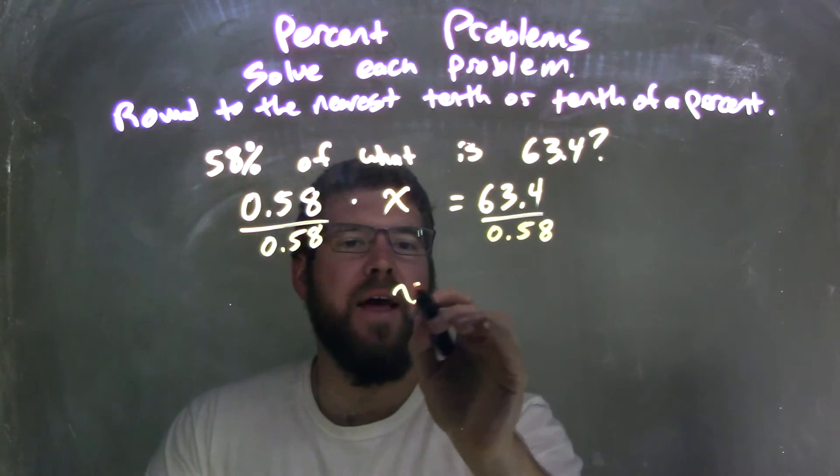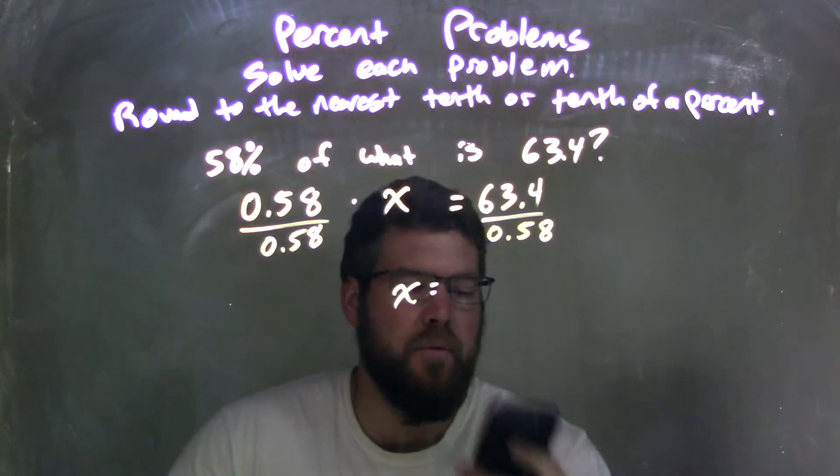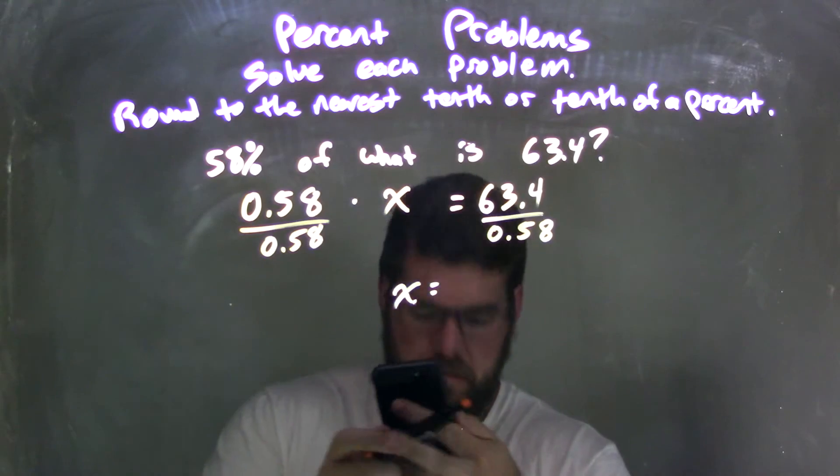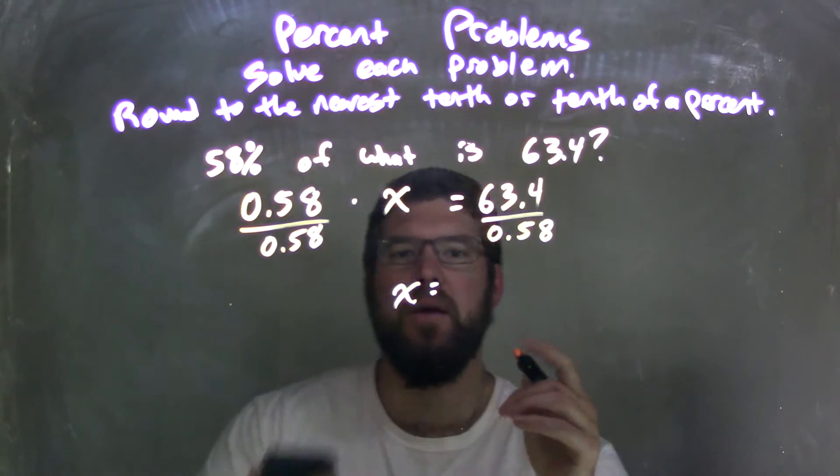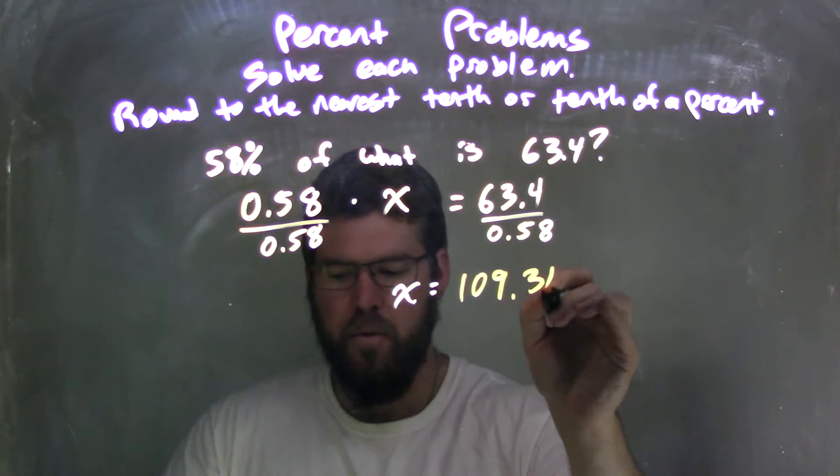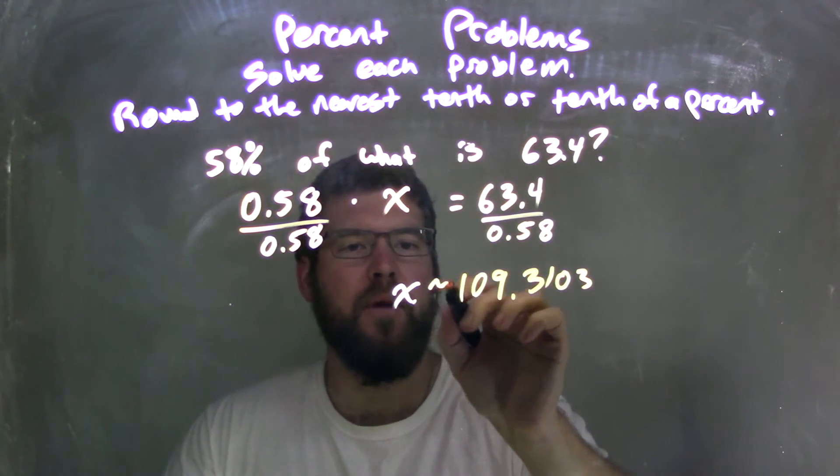Leave me with an x over here on the left, and then on the right, what's 63.4 divided by 0.58, which gives me here 109.3103. That's approximately, I'm rounding it.